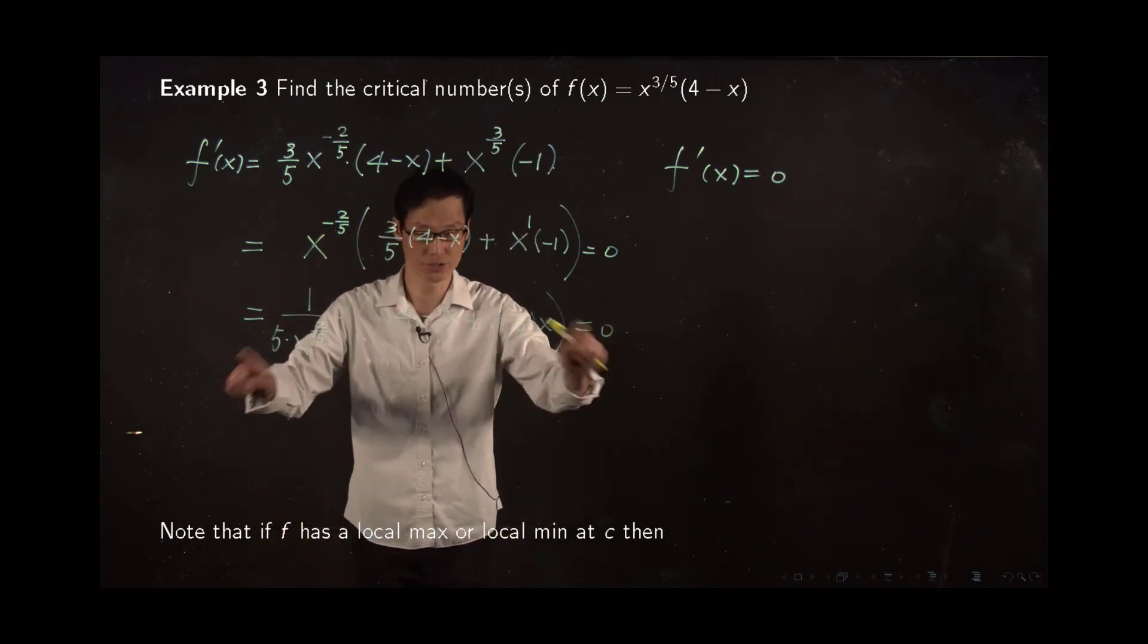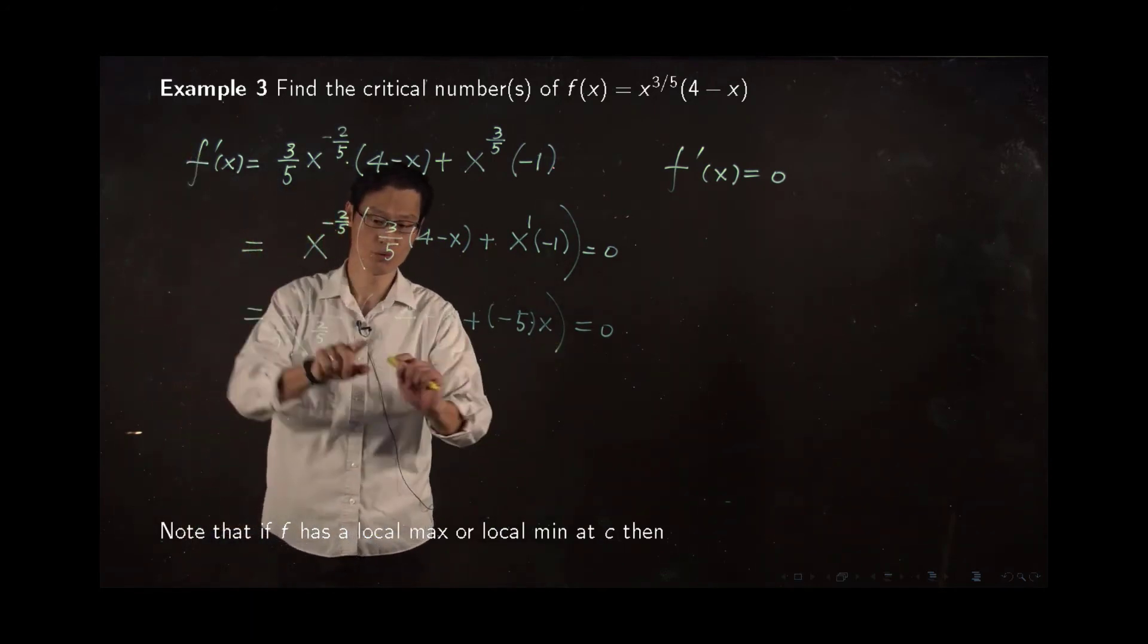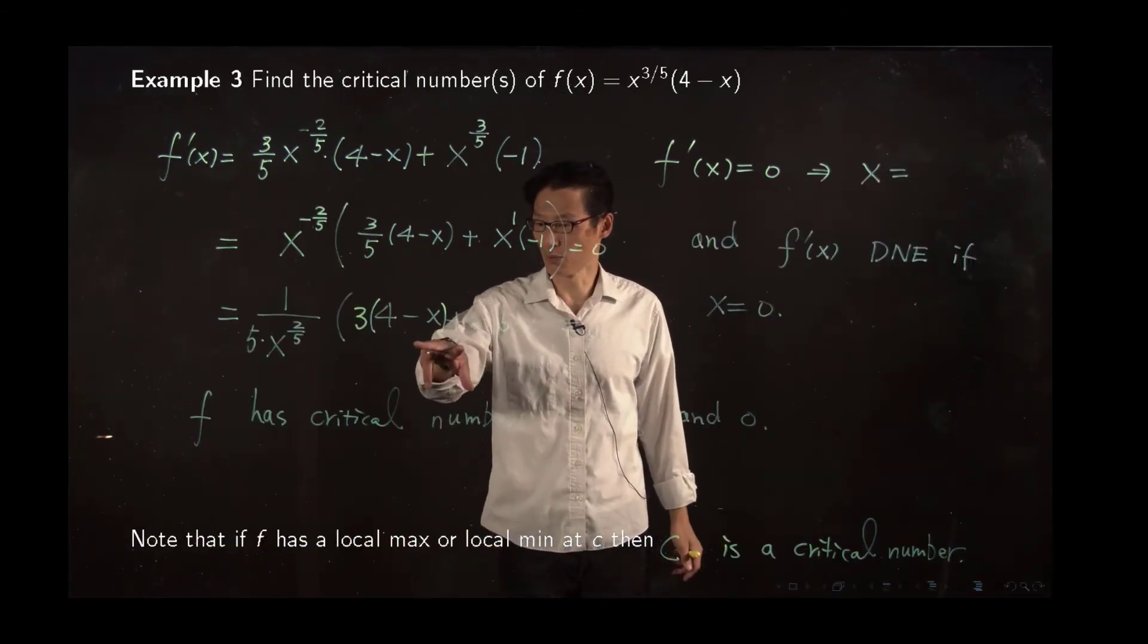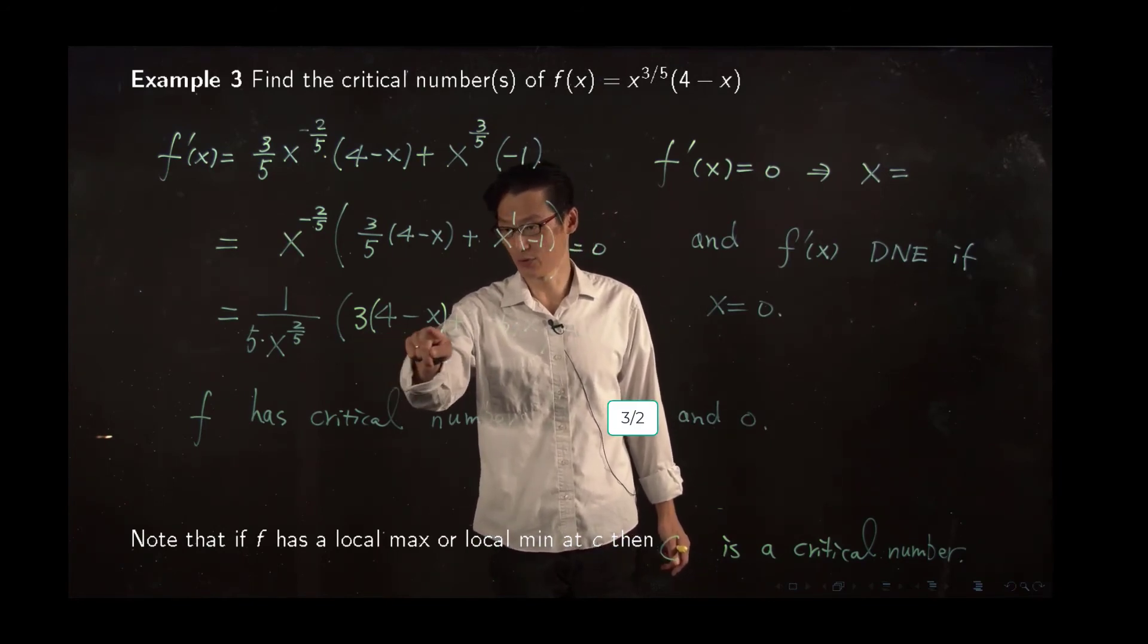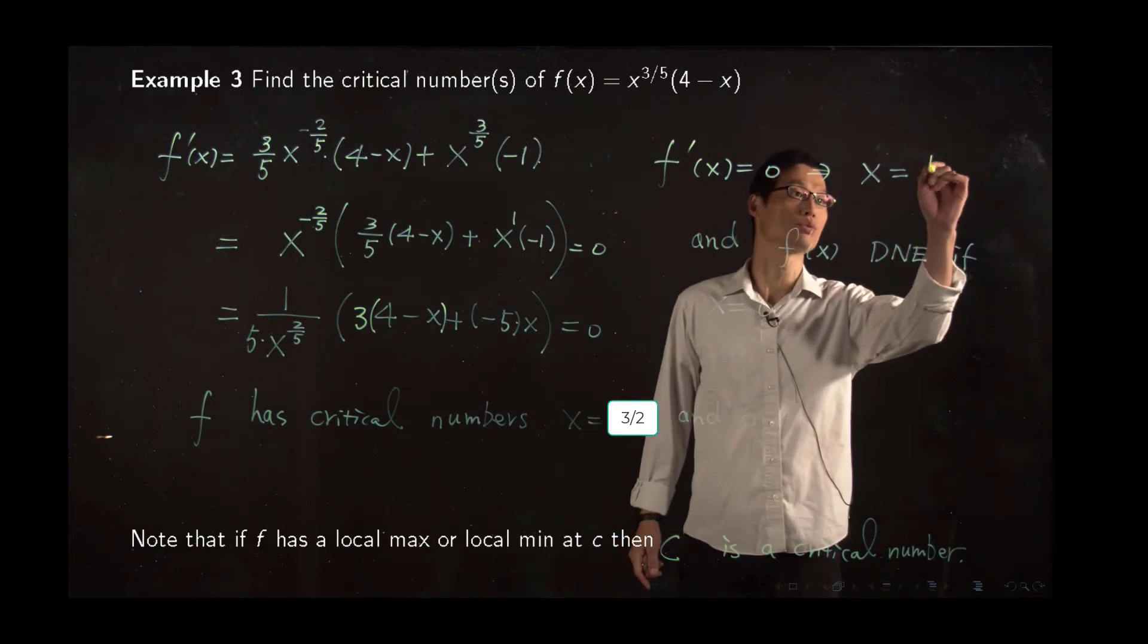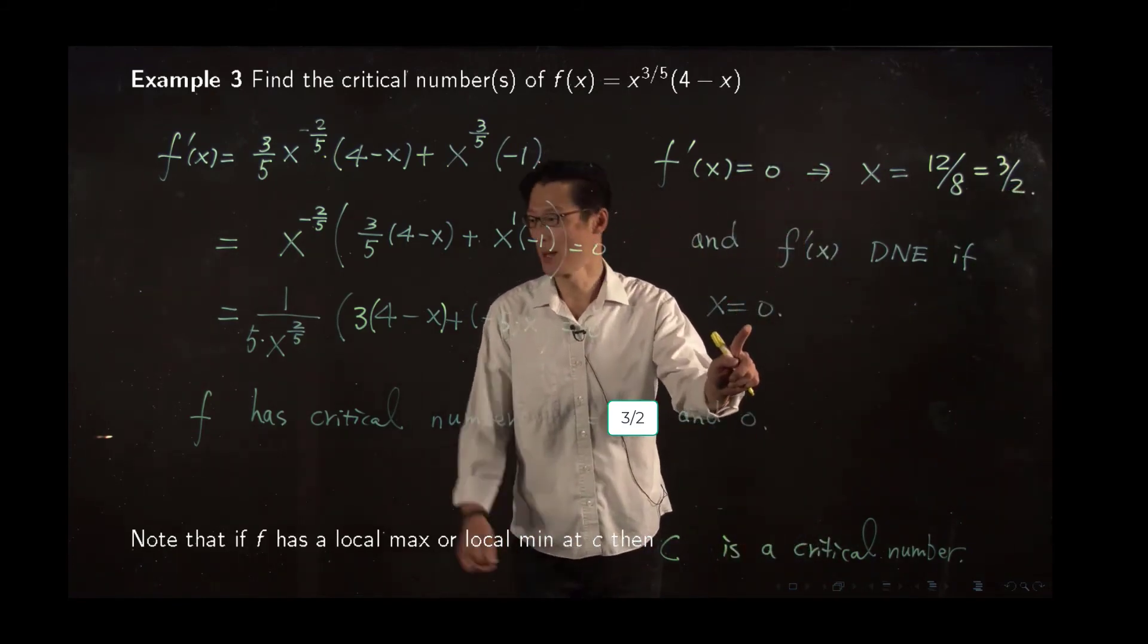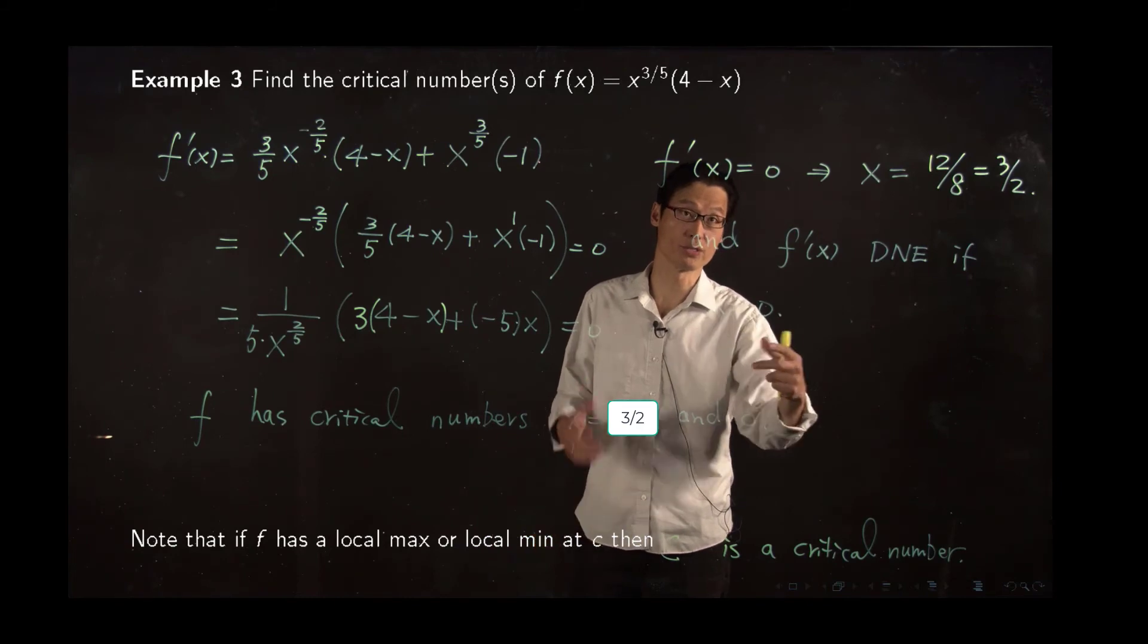So we are ready to solve this equation. Well, this cannot be zero. In order for this to be zero, we have to have this equal zero. So solving this linear equation, we have negative 3 plus negative 5 or negative 8x equals 12. So 12 over 8 or 3 over 2. And of course, x equals 0 makes this denominator 0, so f prime doesn't exist. So x equals 0 is another critical number.